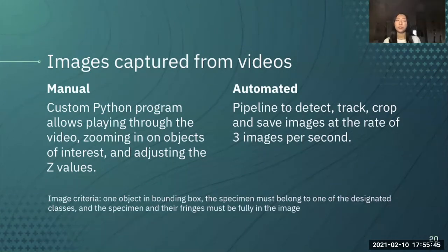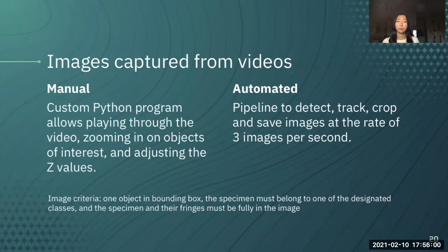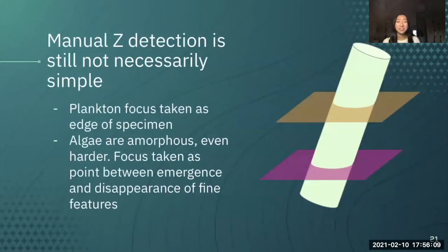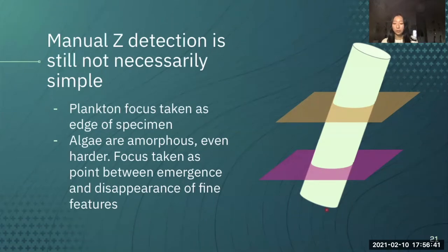Our image criteria was that there was one object in the bounding box, the specimen must belong to one of the designated classes, and the specimen and their fringes must be fully in the image — fringes referring to those refracted light waves bouncing off of the object. It's worth noting that manual Z detection is still not necessarily simple. Even as humans, sometimes we look at plankton and it's hard to tell when it's at the true Z. We can imagine the specimen is something vaguely plankton-like, and there are multiple different planes where you could capture that and say that's the true Z.